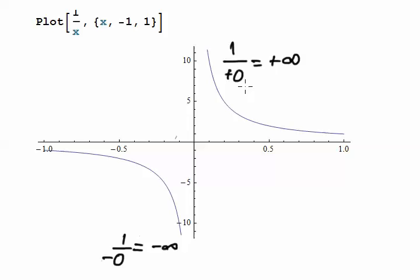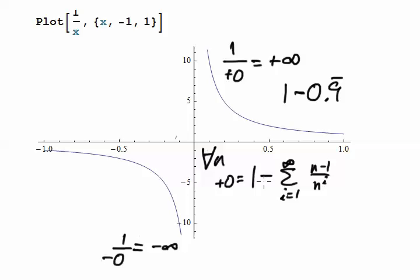Now part of the problem with this is I just about have to define positive zero and minus zero kind of circularly. Positive zero is one minus zero point nine repeating for instance, this is just one expression of it.